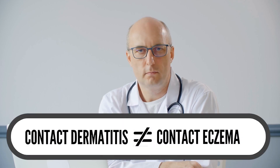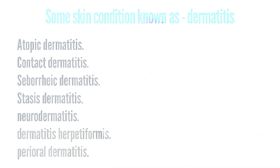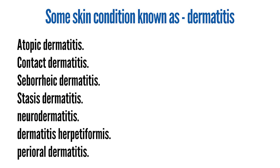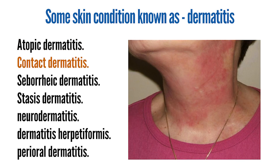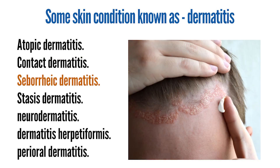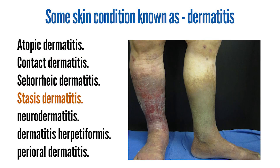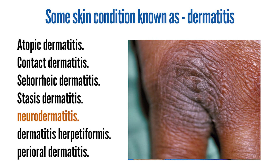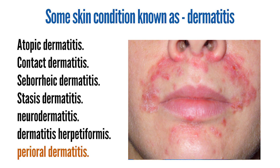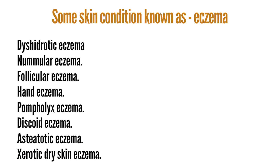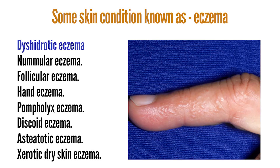For example, many doctors use the terms atopic dermatitis and eczema interchangeably, but wouldn't use the term contact dermatitis in place of eczema. There are some conditions known as dermatitis. They include: atopic dermatitis (the most common form of eczema), contact dermatitis, seborrheic dermatitis, stasis dermatitis (also known as varicose eczema or gravitational eczema), neurodermatitis, dermatitis herpetiformis, and perioral dermatitis.